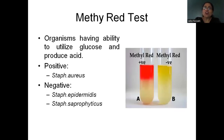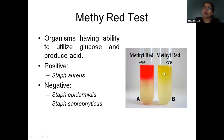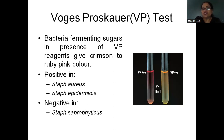Coming to the methyl red test: organisms with the ability to utilize glucose and produce acid — in this media glucose is added with an indicator. If it is Staphylococcus aureus, it will give a red color. Other species like epidermidis and saprophyticus will not give any color. So Staphylococcus aureus is methyl red positive, meaning it can ferment glucose and produce acid.